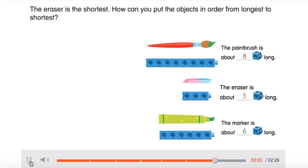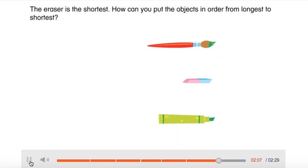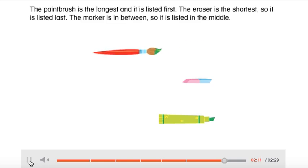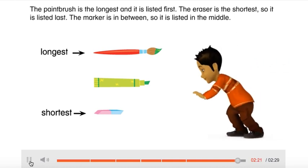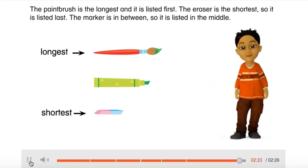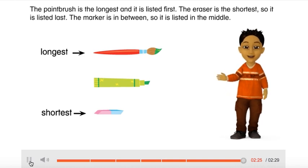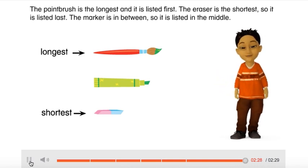The eraser is the shortest. How can you put the objects in order from longest to shortest? The paintbrush is the longest and it is listed first. The eraser is the shortest, so it is listed last. The marker is in between, so it is listed in the middle. Now you know how to compare and order objects by their lengths.